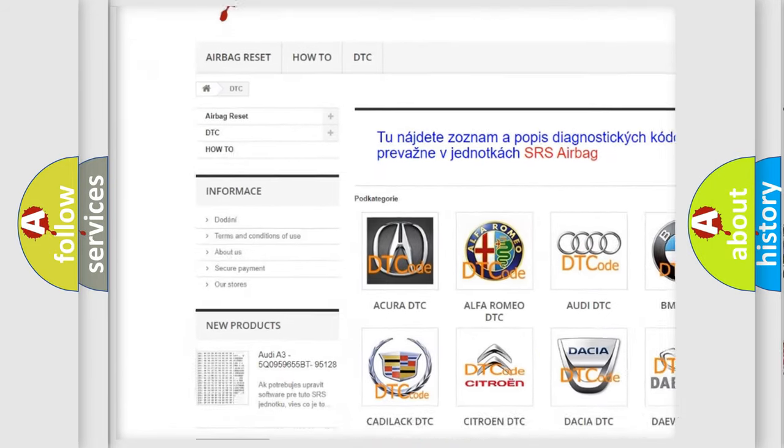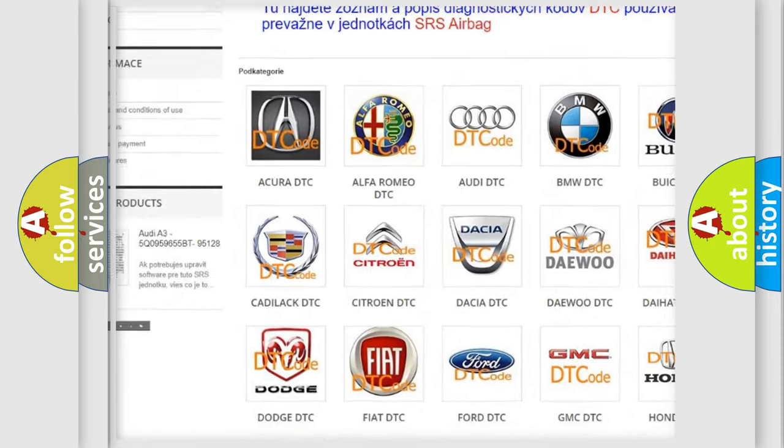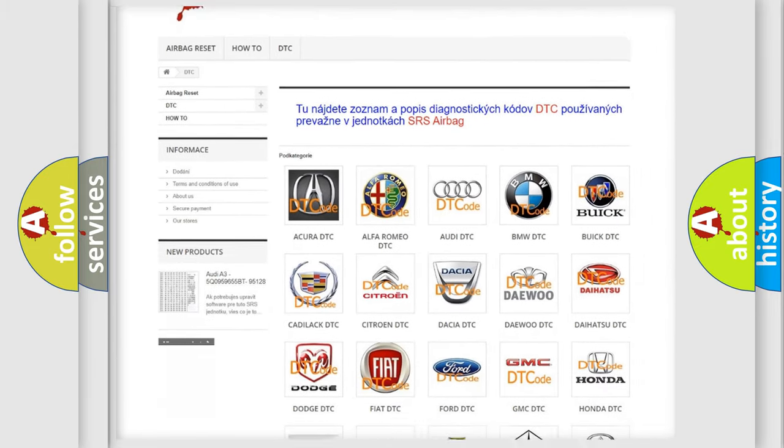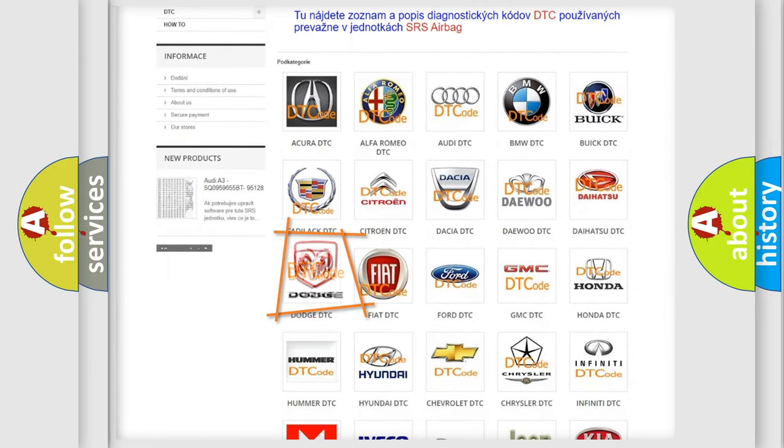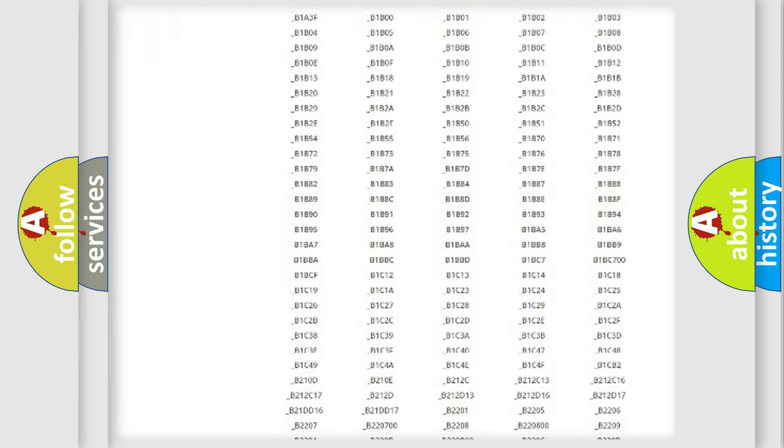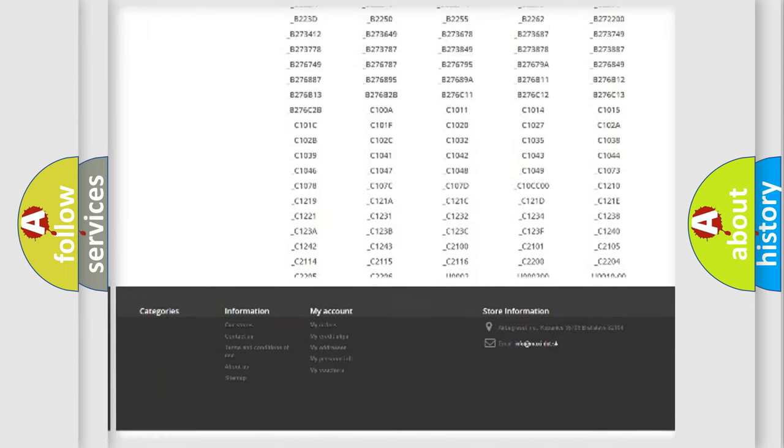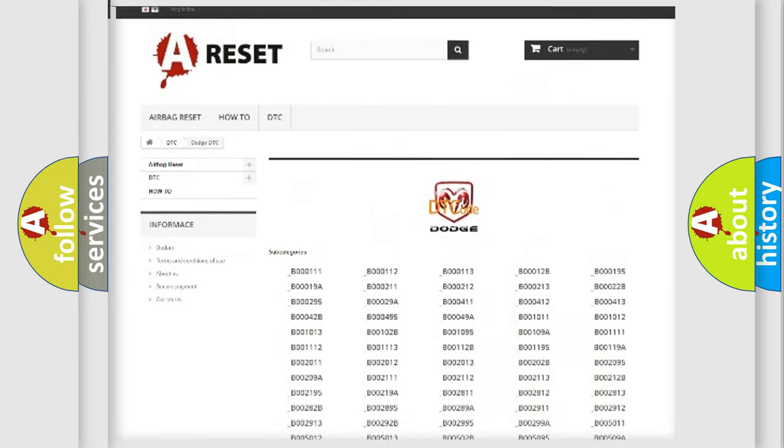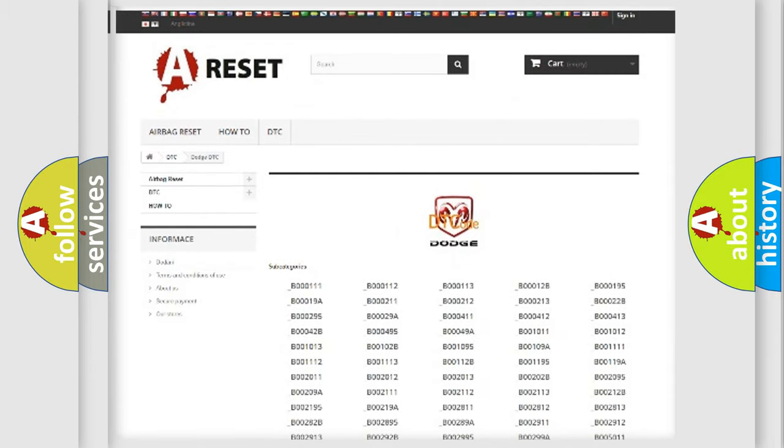Our website airbagreset.sk produces useful videos for you. You do not have to go through the OBD2 protocol anymore to know how to troubleshoot any car breakdown. You will find all the diagnostic codes that can be diagnosed in Dodge vehicles, and many other useful things.